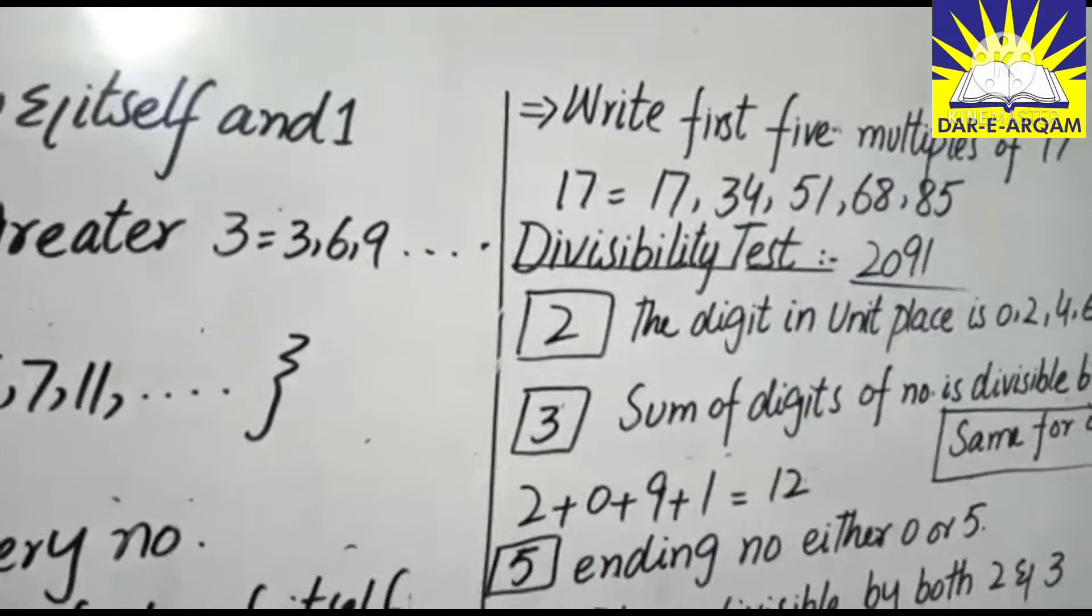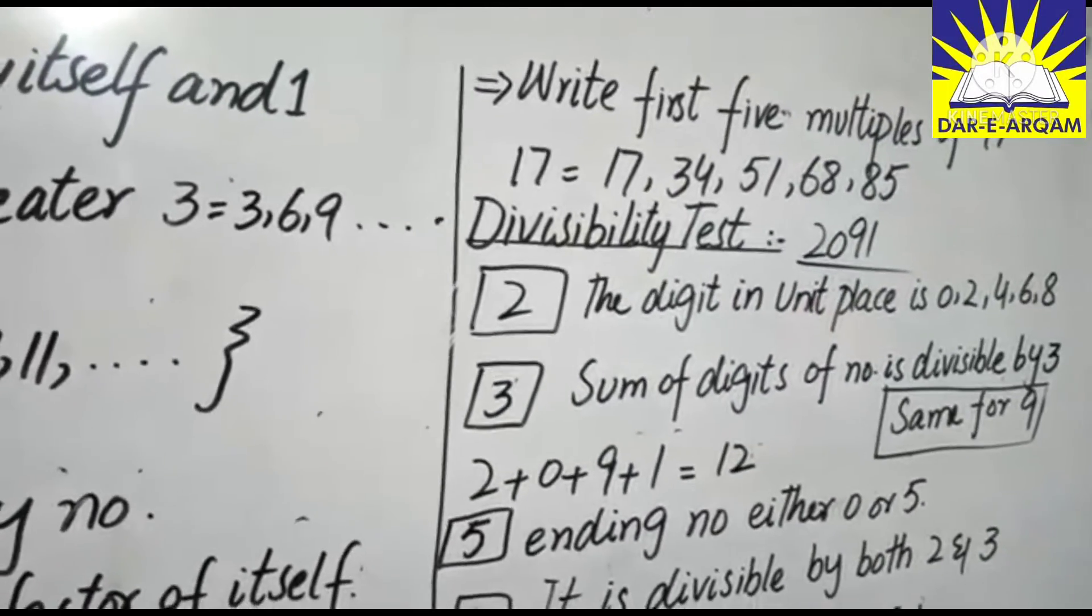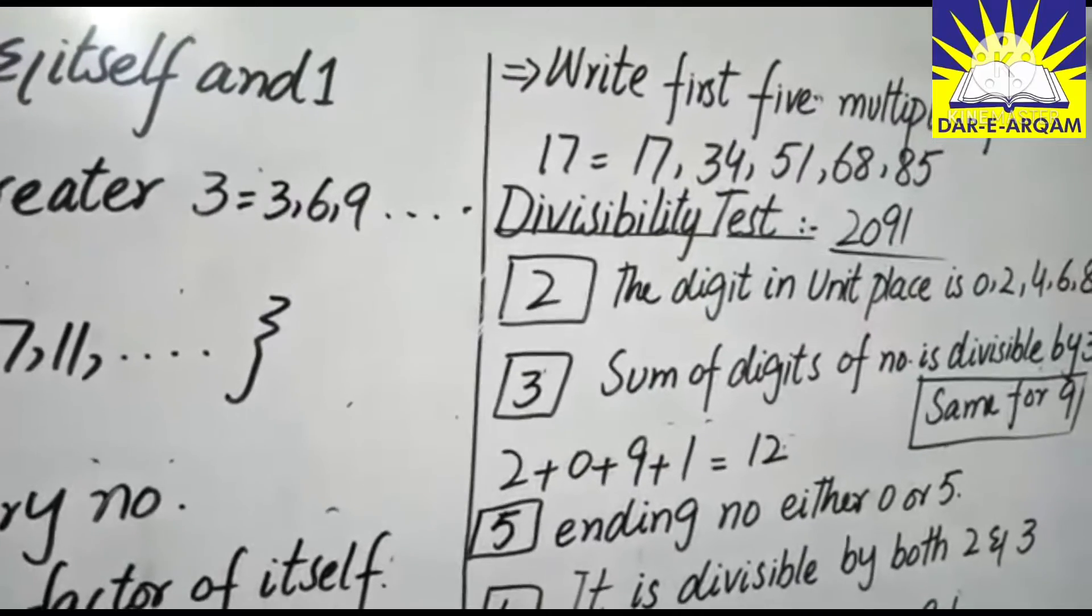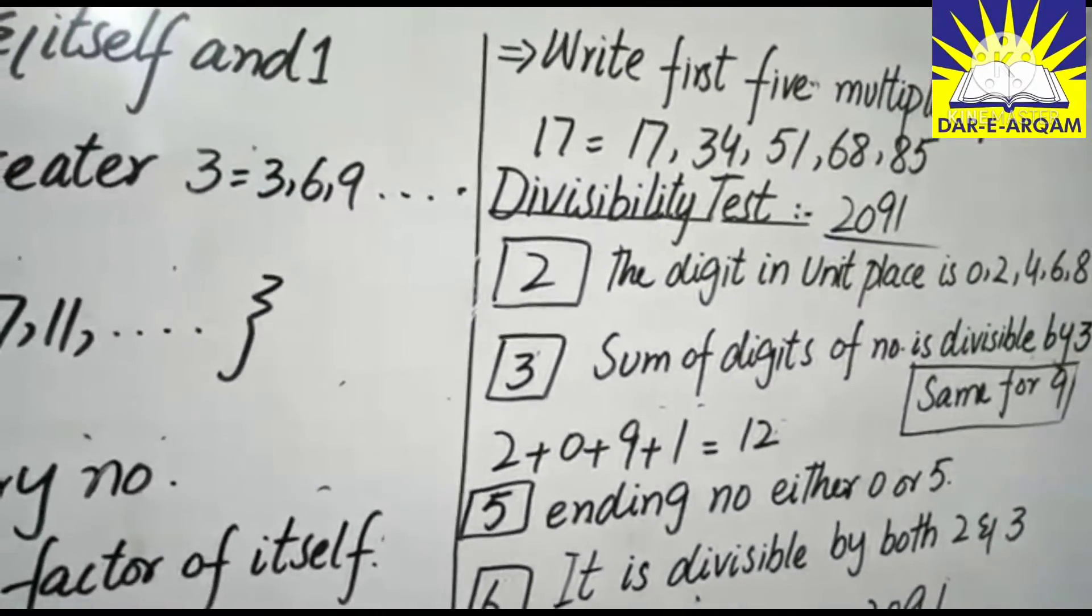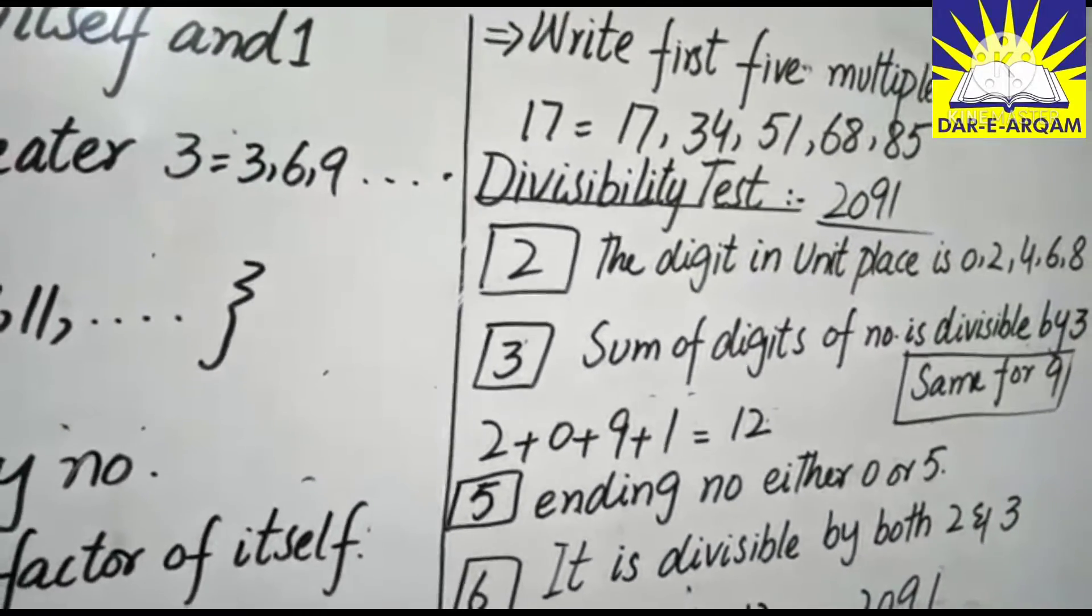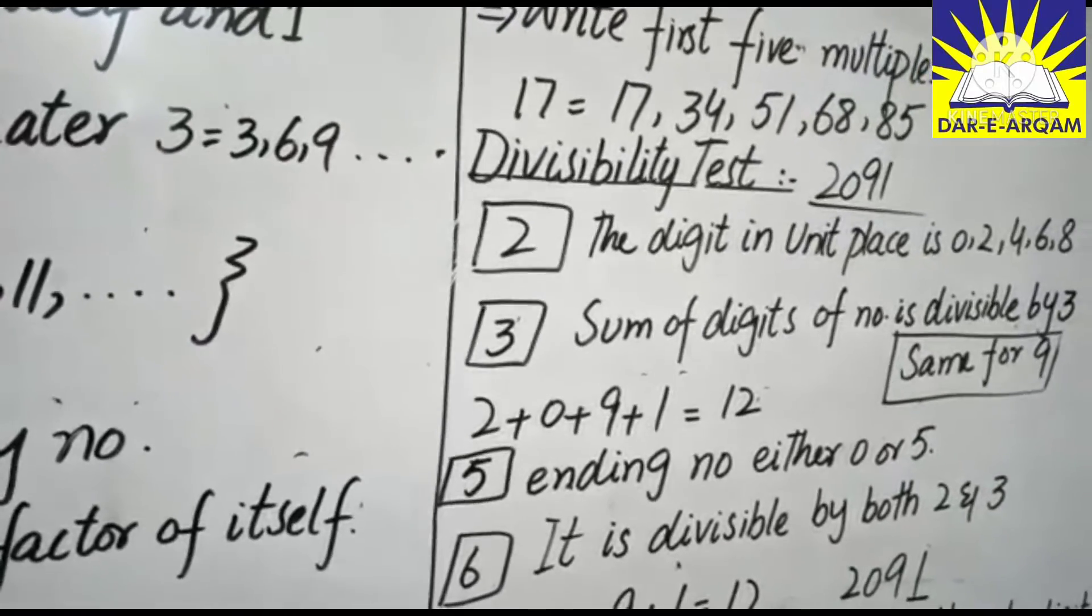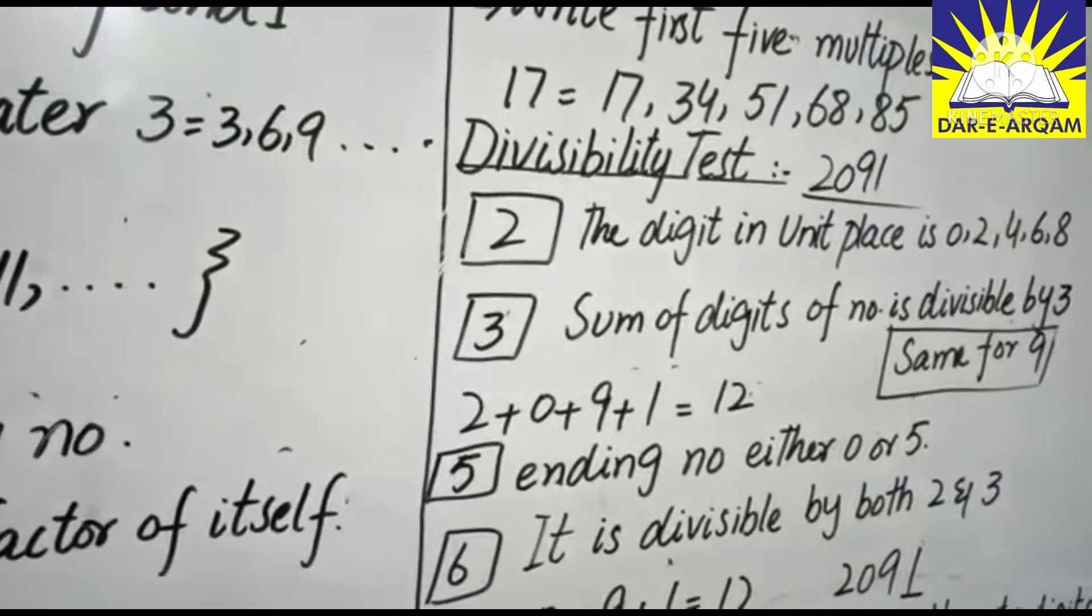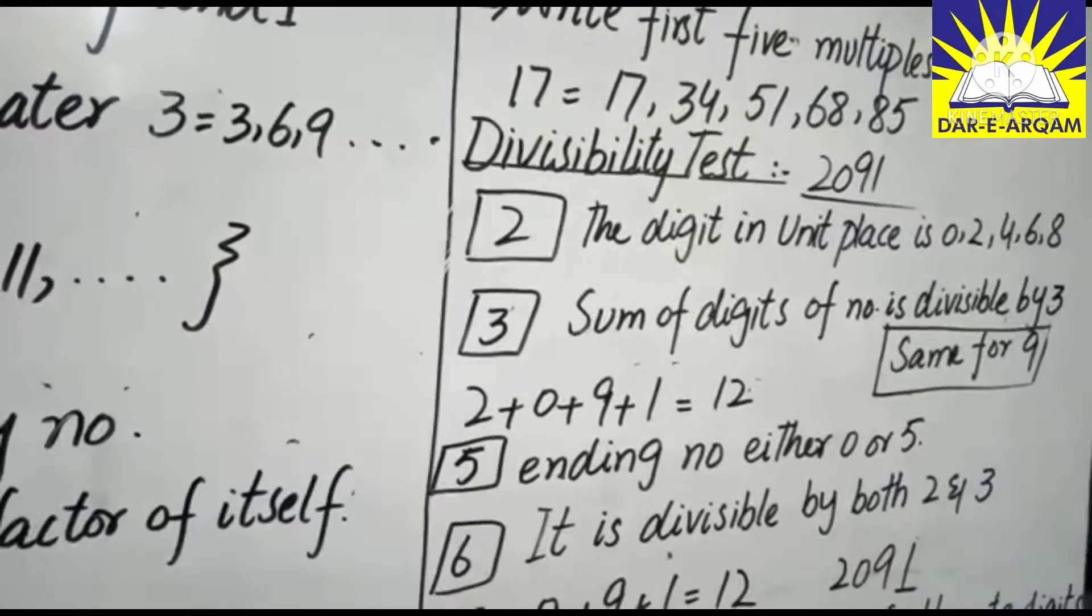Next, write first 5 multiples of 17. We have divisibility tests for 2, 3, 5, 6, 9 and 11. So students, first of all,